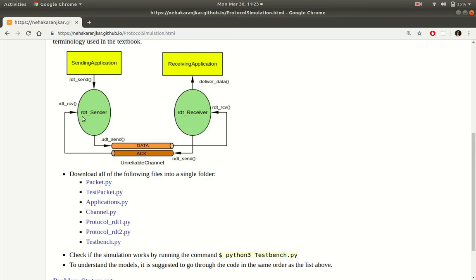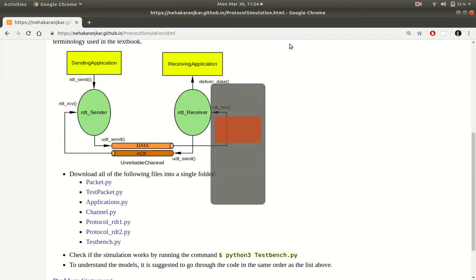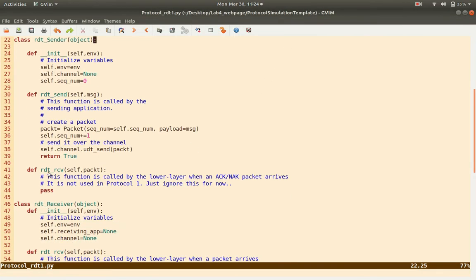Similarly, the rdt sender should have another function: rdt_receive. Who calls that function? The channel calls it with the packet. What should happen when this function is called? Remember in protocol 1 — were any acknowledgements being sent? No, there were no acknowledgements, because it assumed a perfectly reliable channel. So the sender just sends the packet, and the receiver, when it receives the packet, extracts the data and delivers it. The act channel is not being used at all. So the rdt_receive function does nothing — it just says pass.